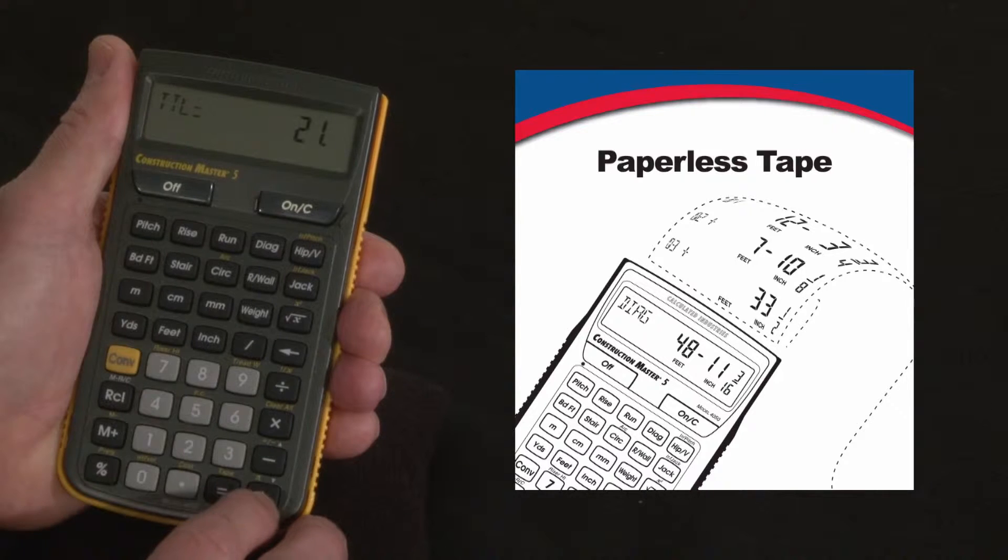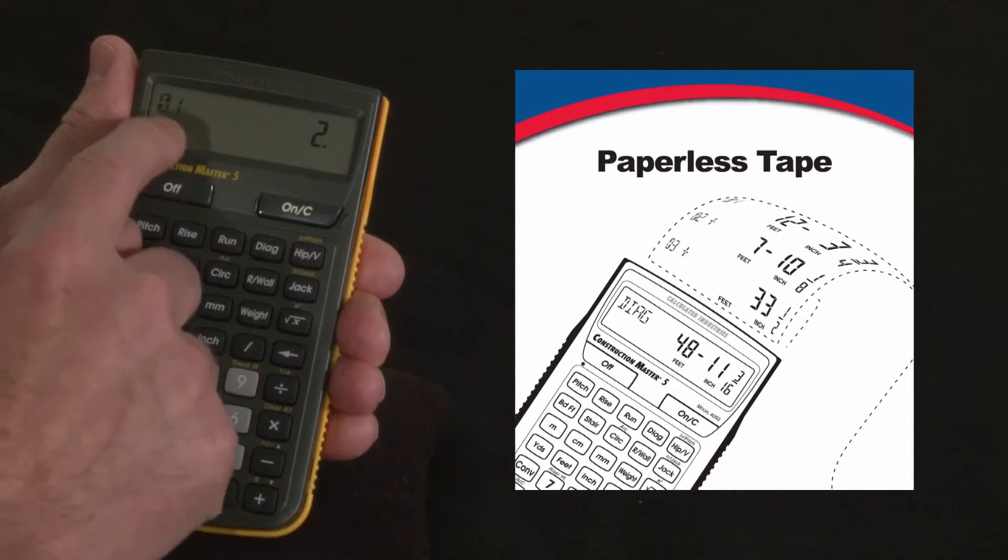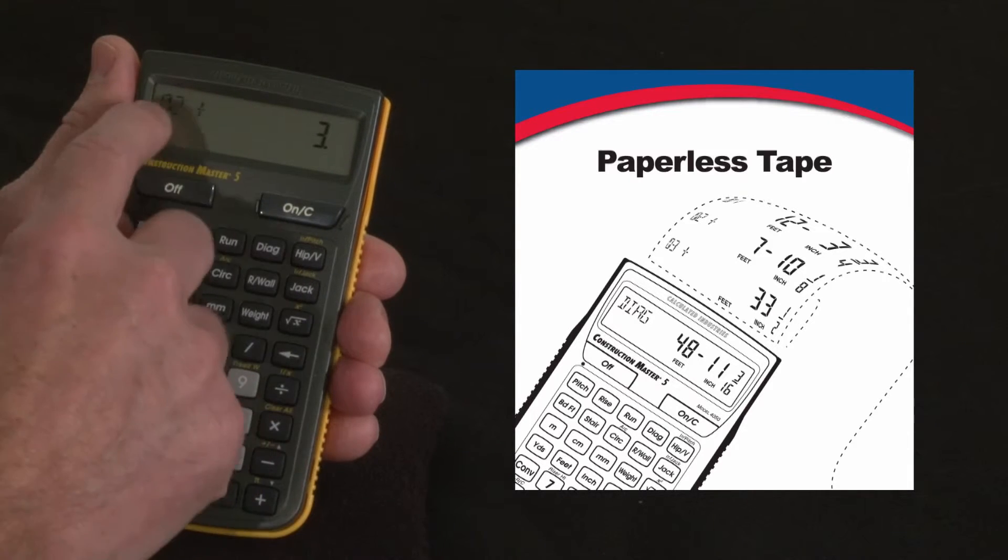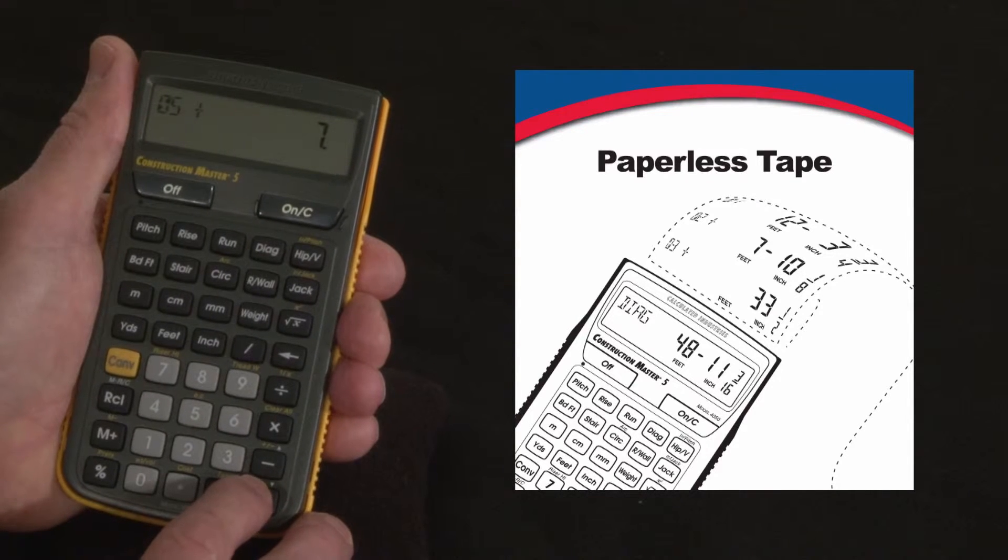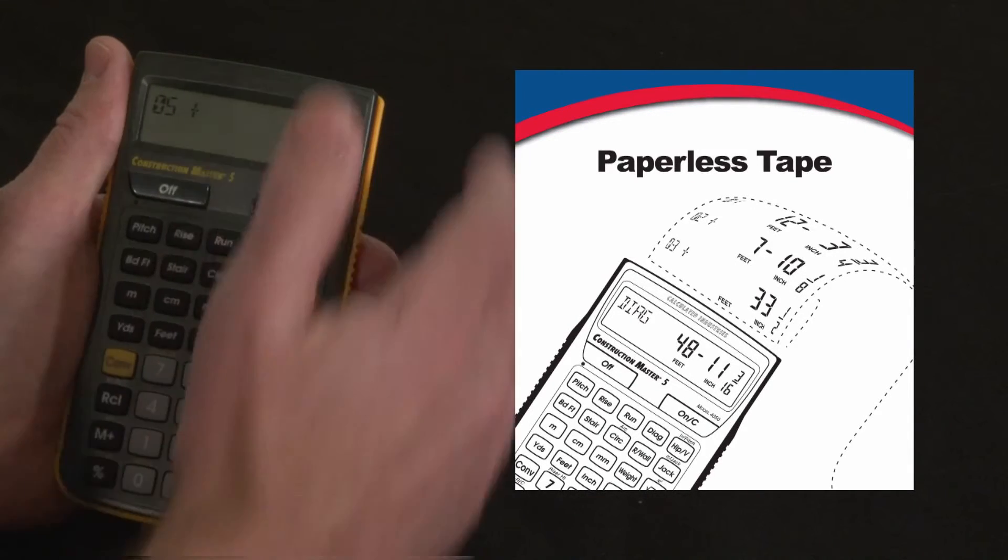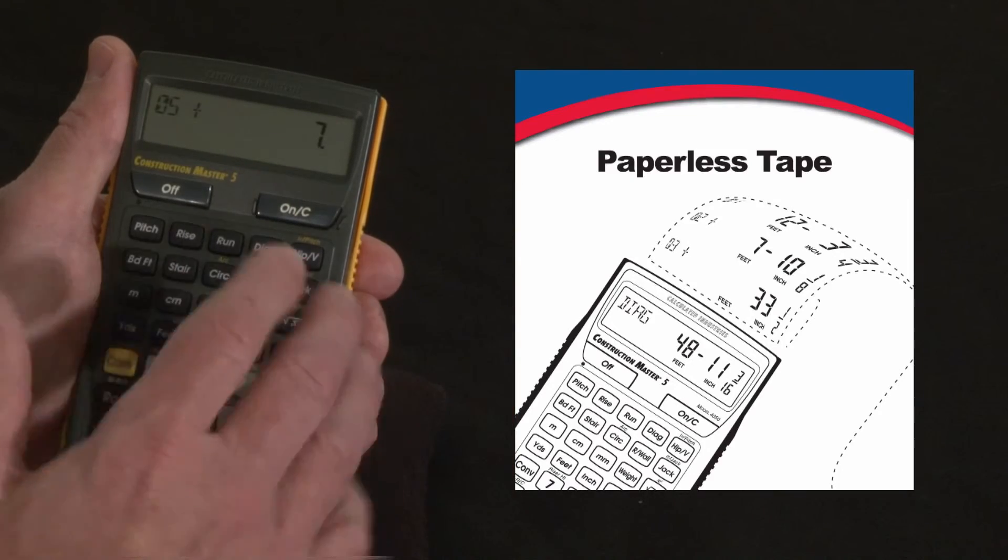Now using the plus and minus key, we can go through that same list of values and see what we did, see if we got them all. First step, we entered a two. Second step, we added three. Then we added four, then five, then seven. Oh, looks like we must have missed the six. So that would tell you that you need to go back and add six to your total and be correct.